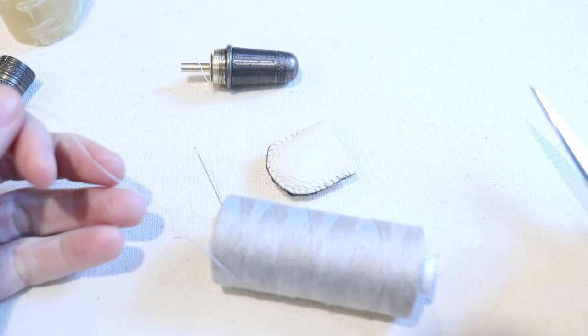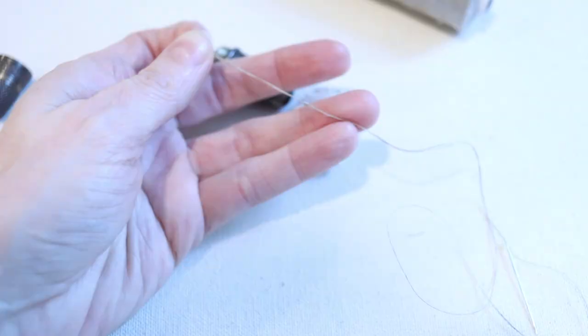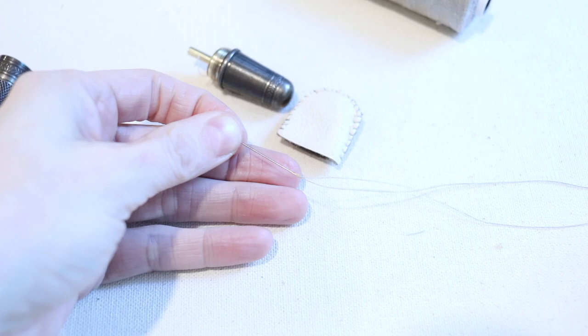So as previously stated, I'm going to be using this 100% flax colored linen thread. I believe this thread I purchased from Burnley and Trowbridge. You can use a polyester thread or a cotton thread. Whatever you have on hand will work just fine. Thread your needle, double up your thread and tie a double knot at the end.